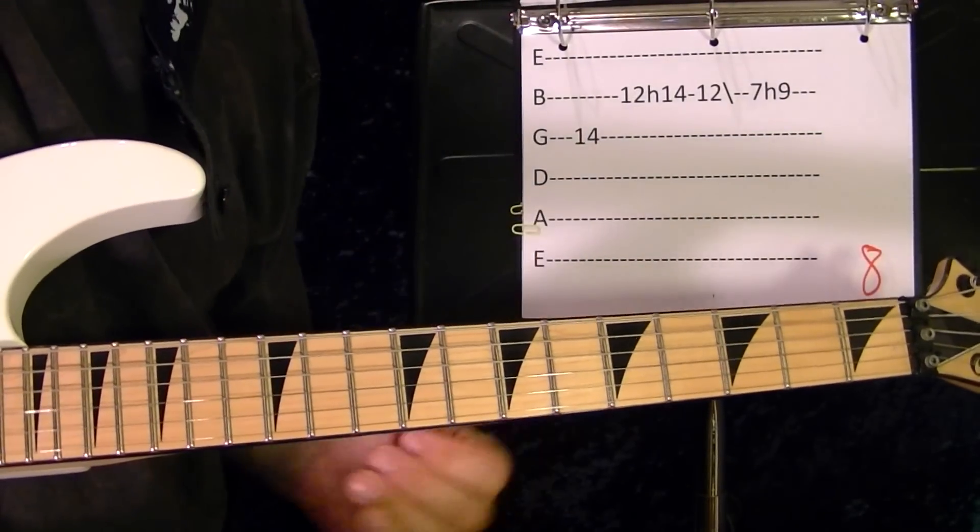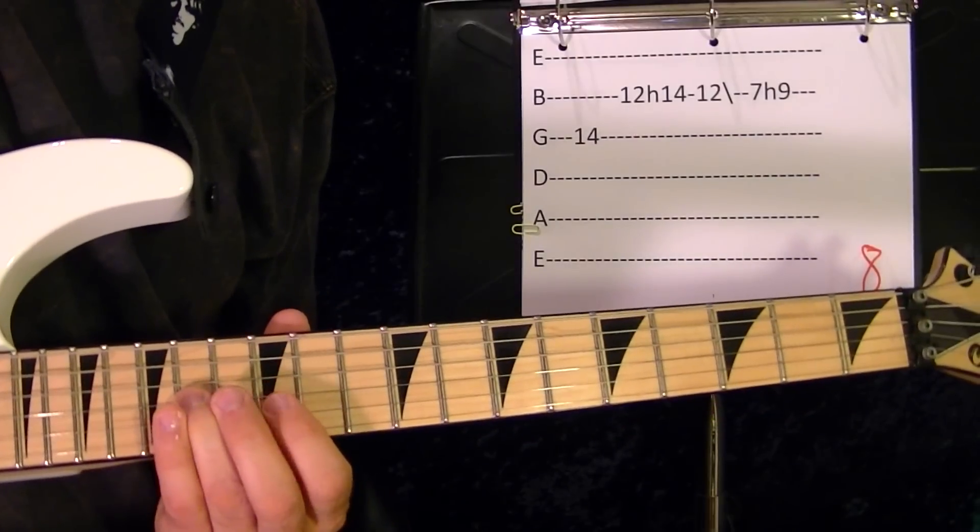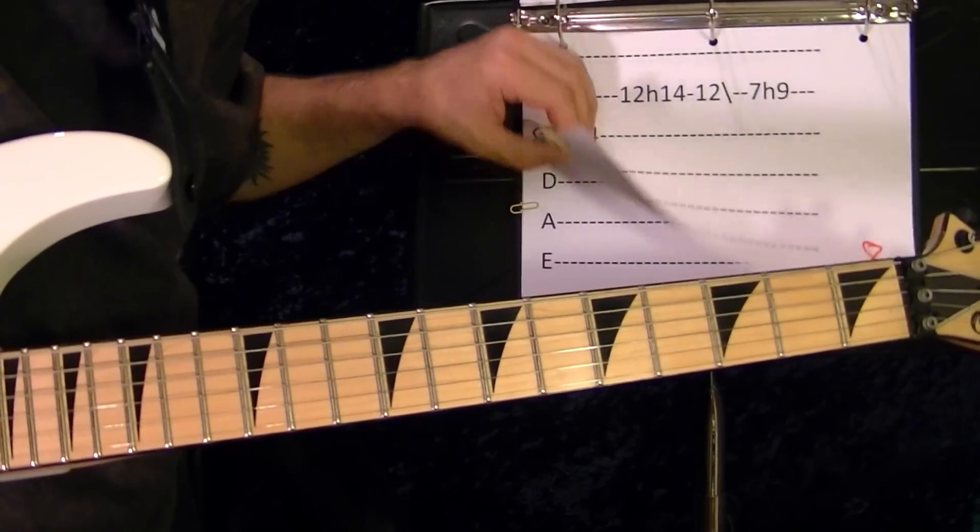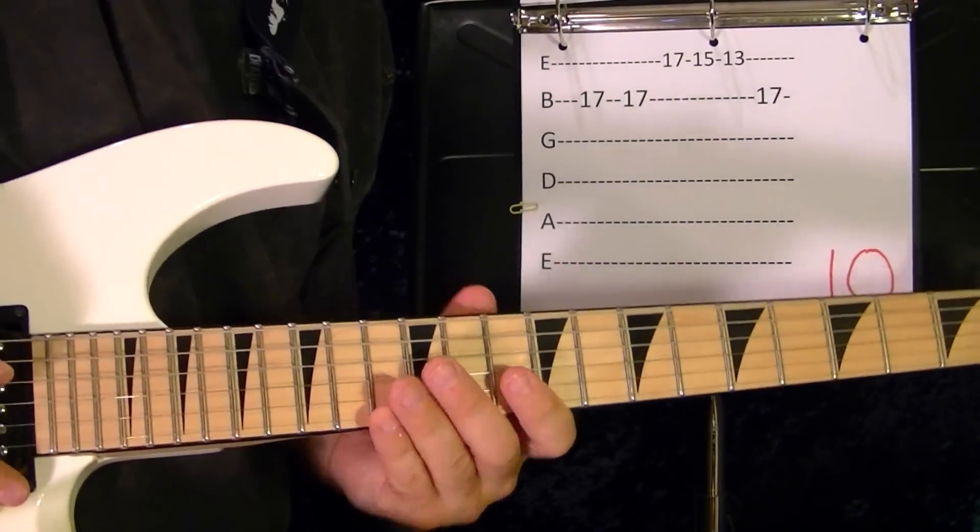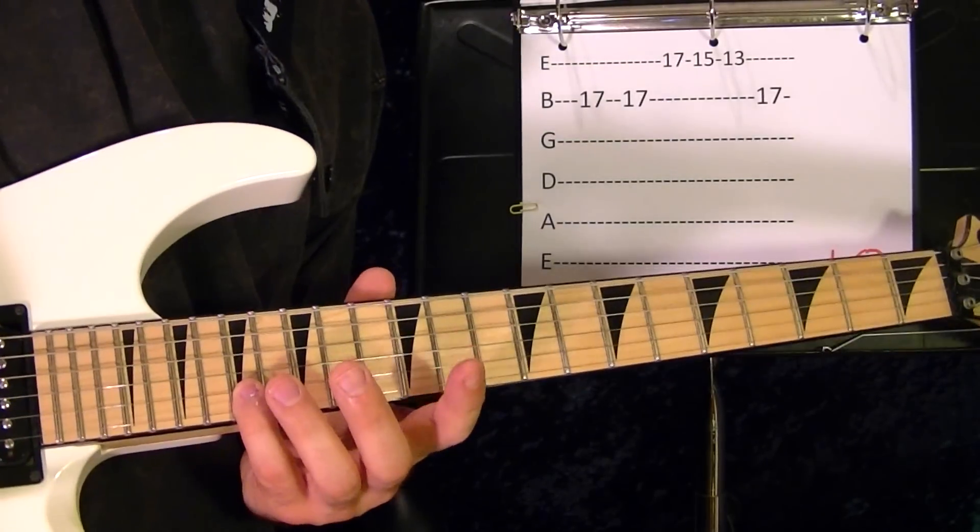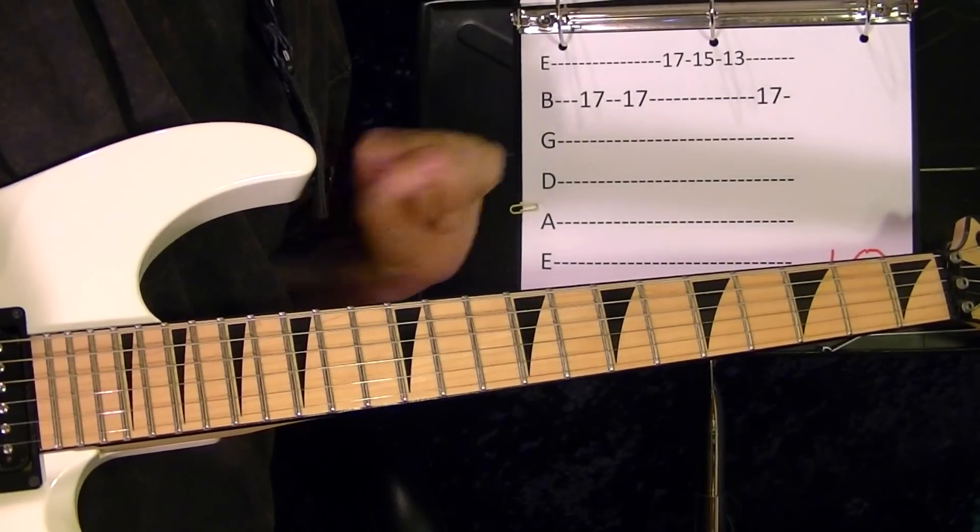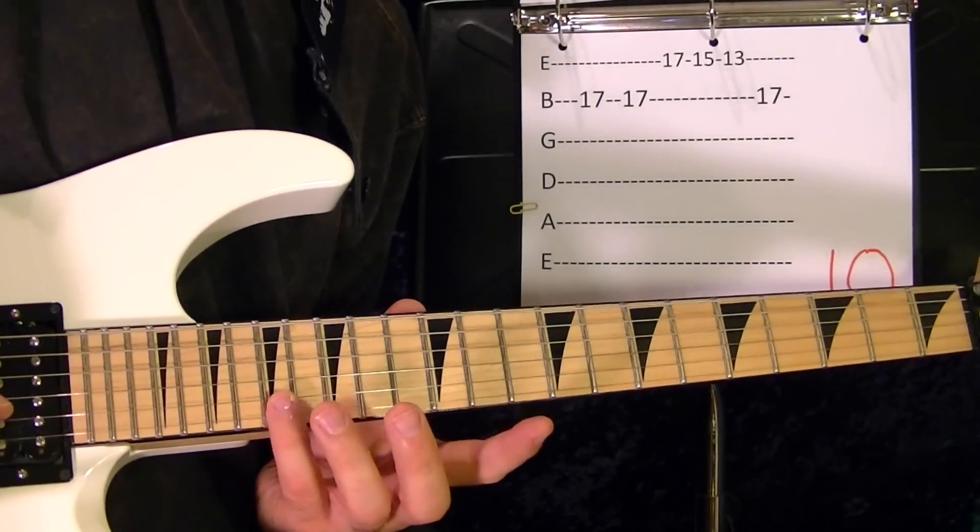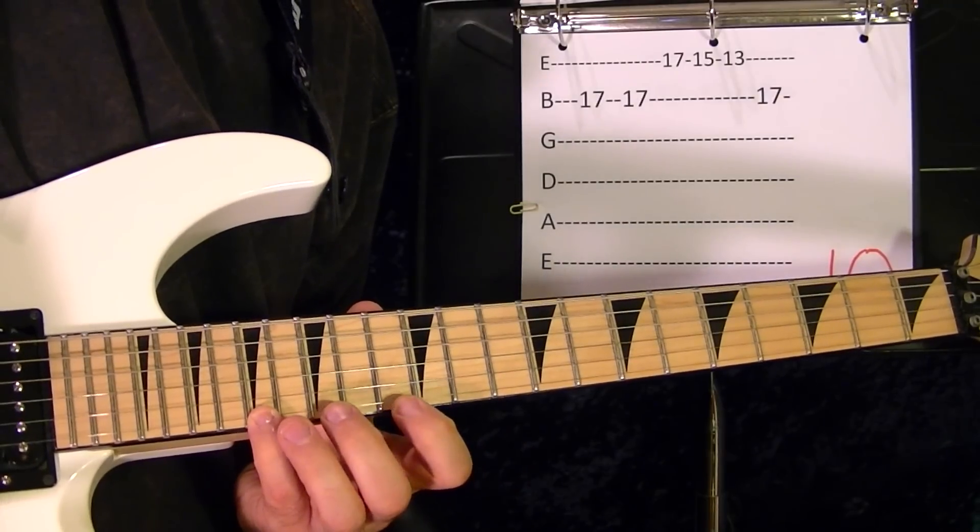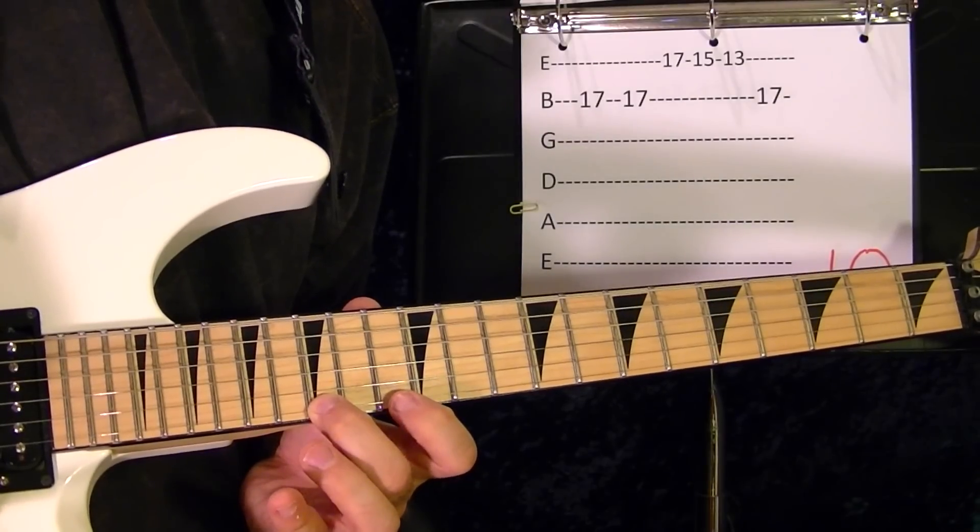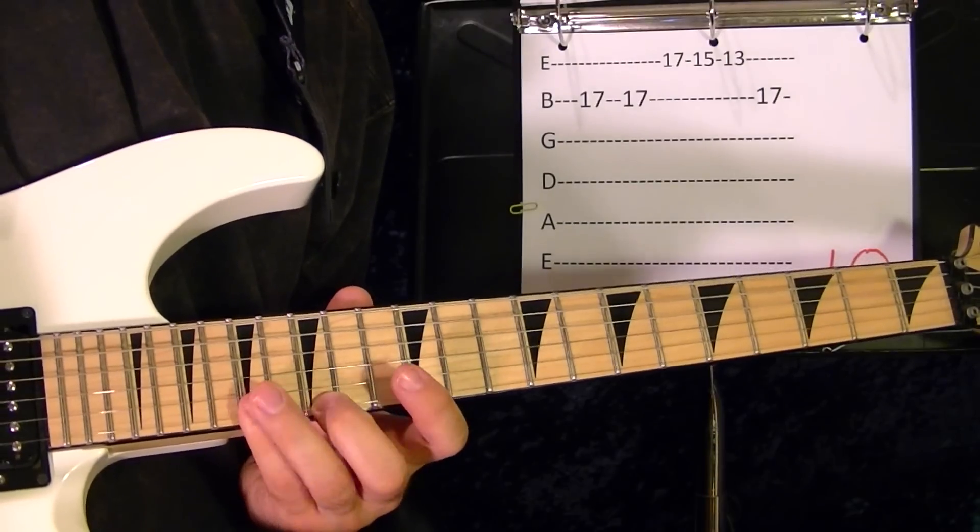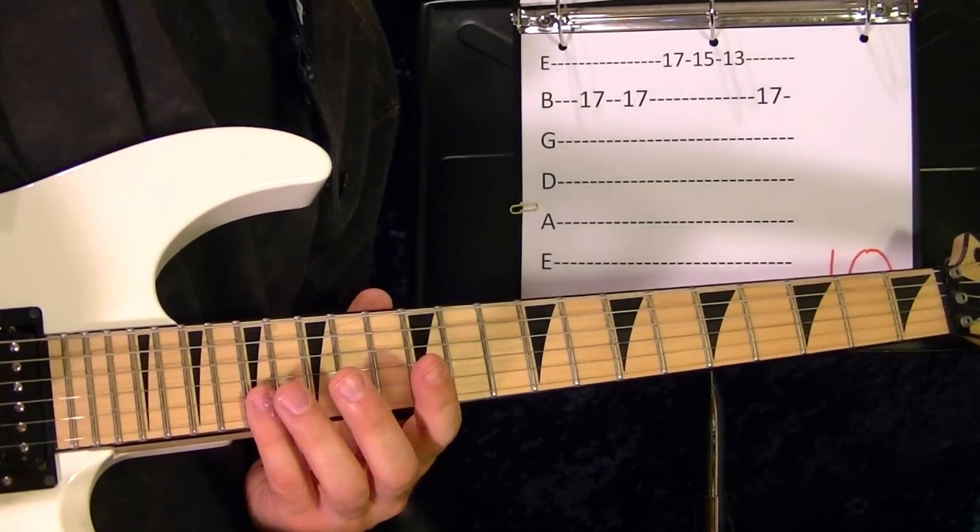Riff number eight which you've already played once. Get high up, get riff number ten, which is the fast picking, but you don't have to. You can just play it regular if you want. So second string seventeenth fret twice, first string seventeenth fret, fifteenth, thirteenth, second string seventeenth fret. Or you can speed pick like I did.